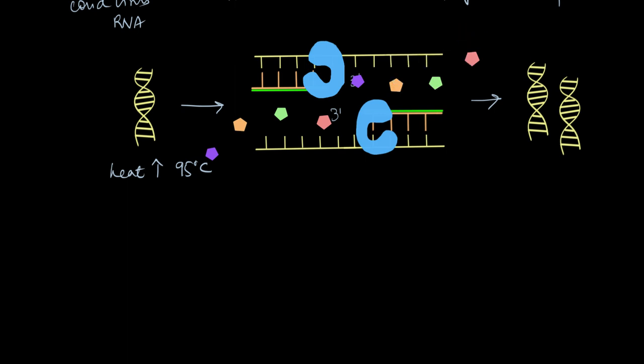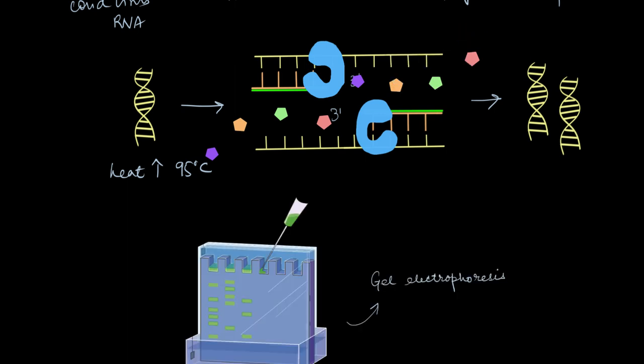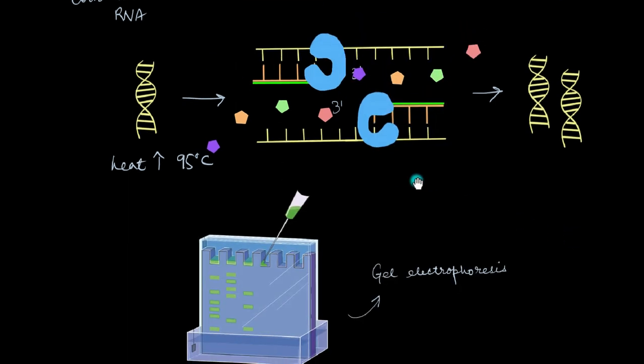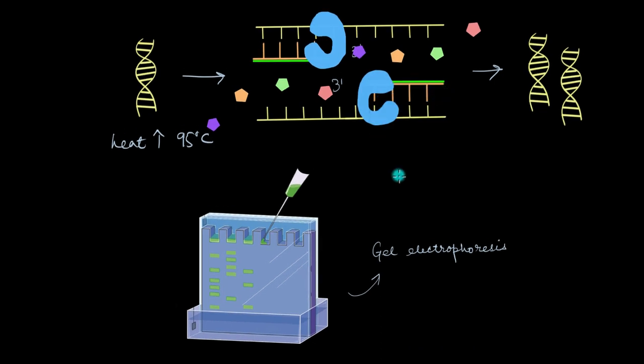So we use gel electrophoresis to visualize the results that we get from the PCR machine. Gel electrophoresis is a method that separates out DNA based on their size using electricity.